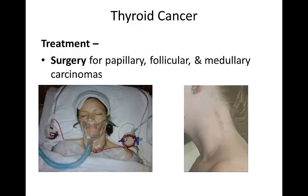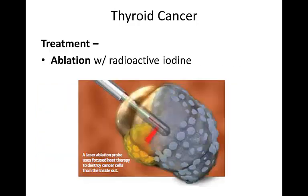After surgery, thyroid hormone is administered in suppressive doses to lower the levels of TSH to a stable state. The remaining thyroid tissue is inadequate to produce sufficient thyroid hormone, so thyroxine is required permanently. Ablation can be done with radioactive iodine or laser ablation to totally kill the cells.